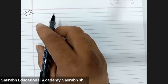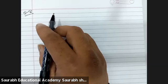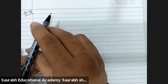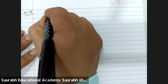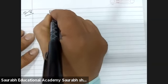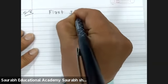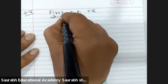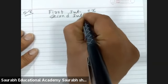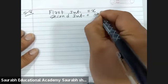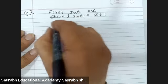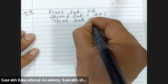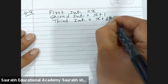Question number 8: three consecutive integers, when taken in increasing order and multiplied by 2, 3, and 4 respectively, add up to 74. Let's assume the first integer is x, the second integer is x plus 1, and the third integer is x plus 2.